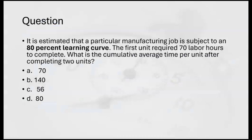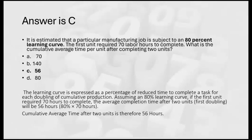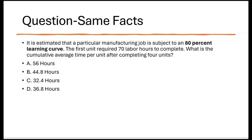Here's the kind of question they could ask: 'It is estimated that a particular manufacturing job is subject to an 80% learning curve. The first unit required 70 labor hours to complete. What is the cumulative average time per unit after completing two units?' The answer is C — 56 hours. Assuming an 80% learning curve, if the first unit required 70 hours, the average completion time after two units (the first doubling) is 80% of 70, or 56 hours.